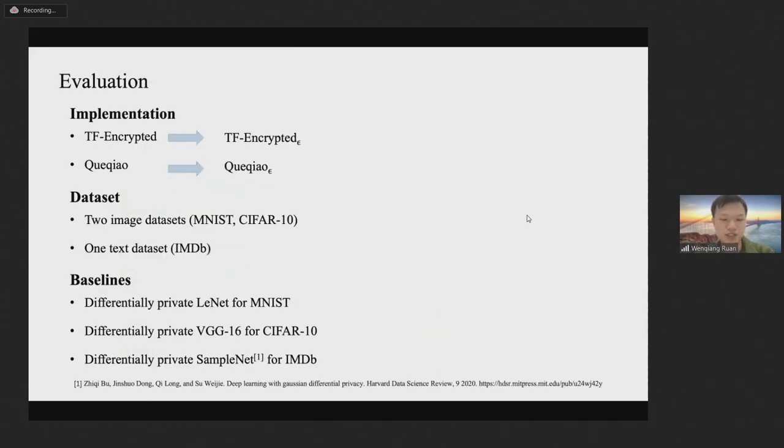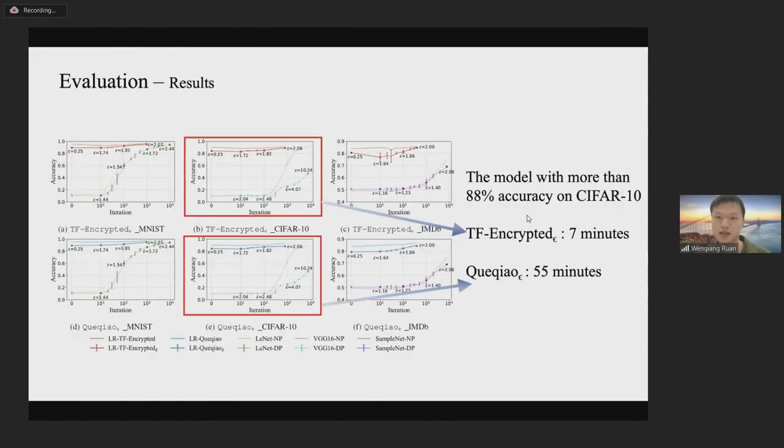We implement PEA on two open source MPL frameworks, TF Encrypted and CrypTen as TF Encrypted Epsilon and CrypTen Epsilon. We tested these two frameworks on three datasets. MNIST and CIFAR-10 are image datasets, and IMDB is a text dataset. For MNIST, we use differentially private LeNet as the baseline. For CIFAR-10, we use differentially private VGG-16 as the baseline. The experimental results show that TF Encrypted Epsilon and CrypTen Epsilon can balance the relationship between privacy, efficiency and accuracy. For example, TF Encrypted Epsilon and CrypTen Epsilon can train a differentially private classifier for CIFAR-10 with an accuracy of more than 88% within seven minutes and 55 minutes.